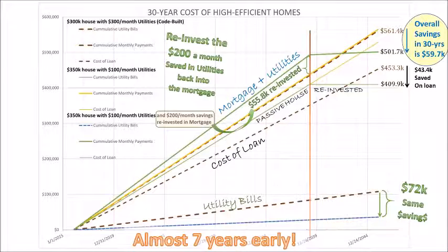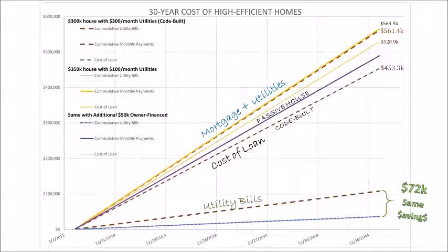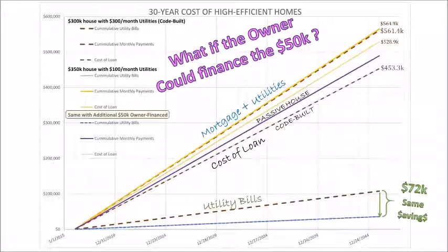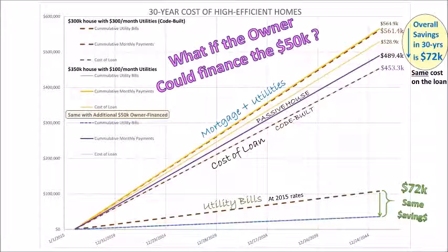One other scenario I want to run past you. Let's just say the owner can finance that $50,000 themselves, without financing it through a bank. You have the same operational savings — it's the same design, the same $100 a month bill. You have the same cost on the loan, but over those 30 years your savings has increased to $72,000.